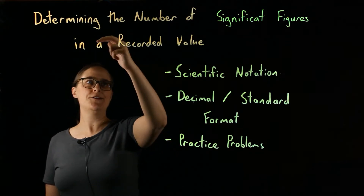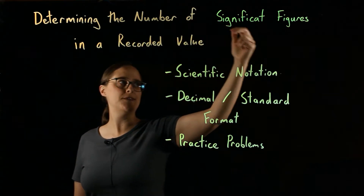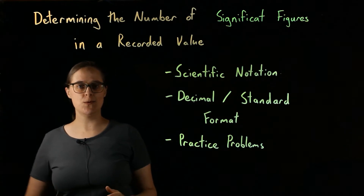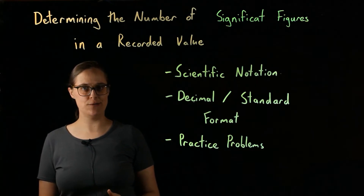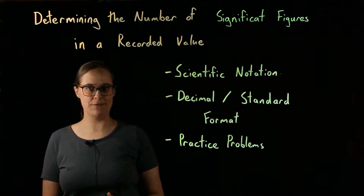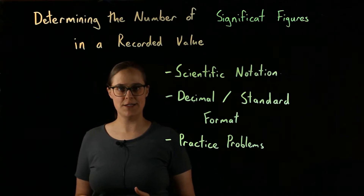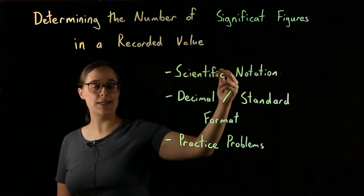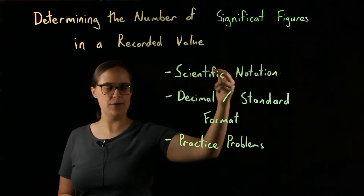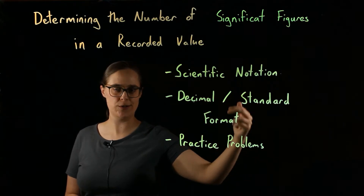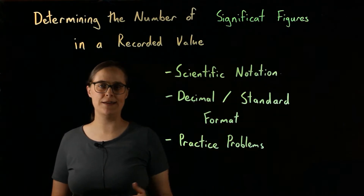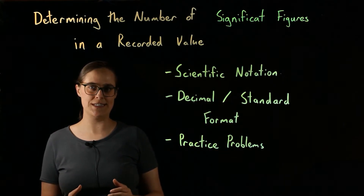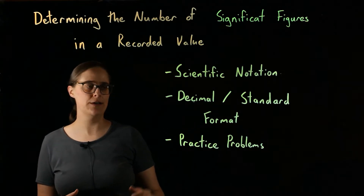In this video, I'm talking about determining the number of significant figures in a recorded value. This is one video in a series of videos about significant figures. By the end of this video, you should be able to look at a number written in either scientific notation or decimal, also called standard format, and determine which of those digits are significant and how many of them there are.